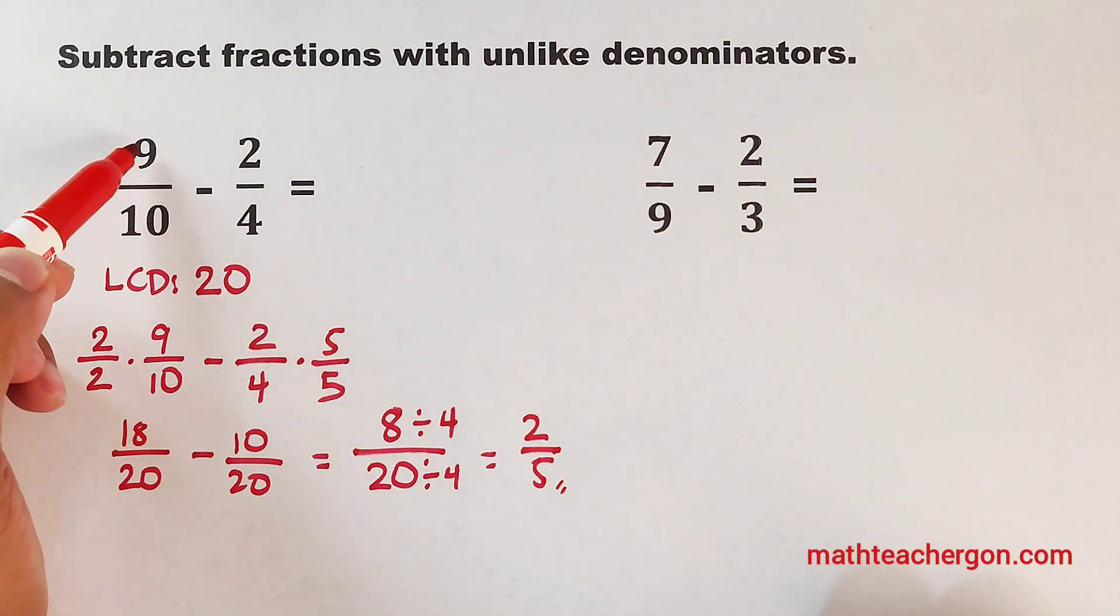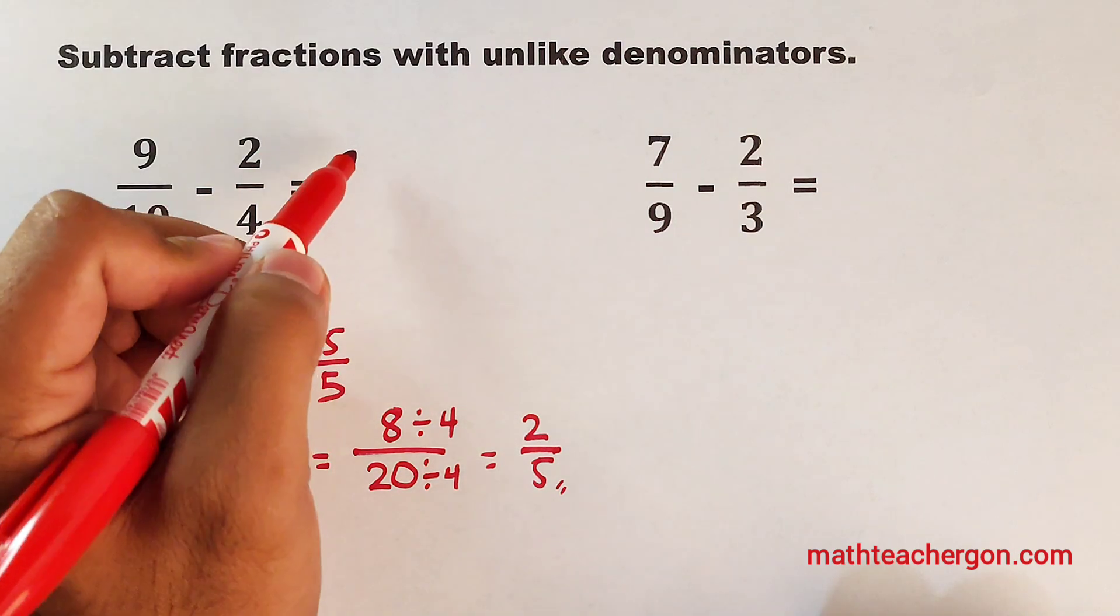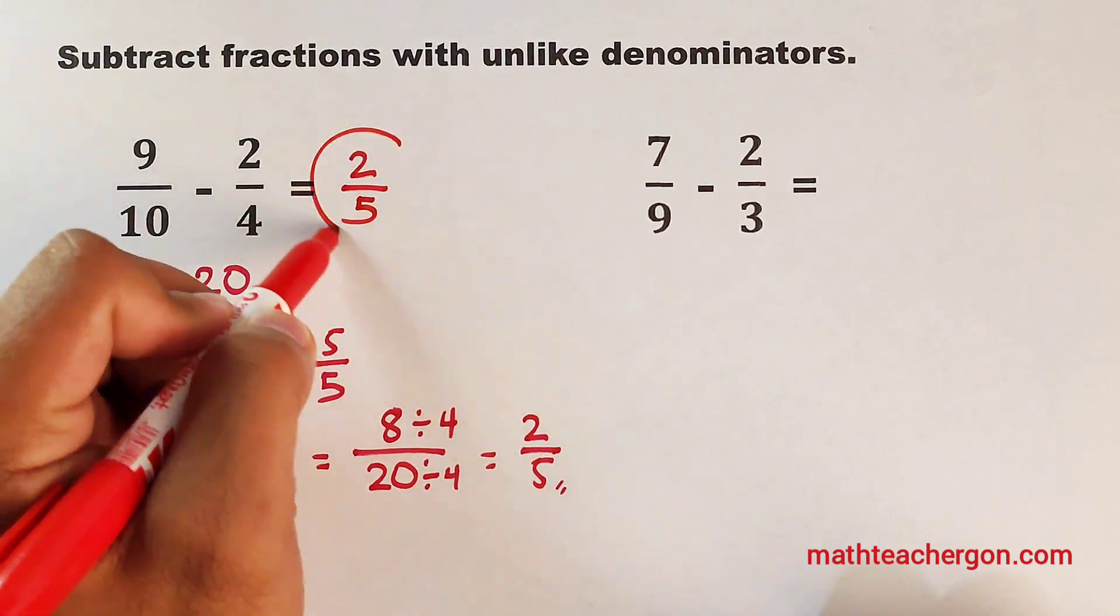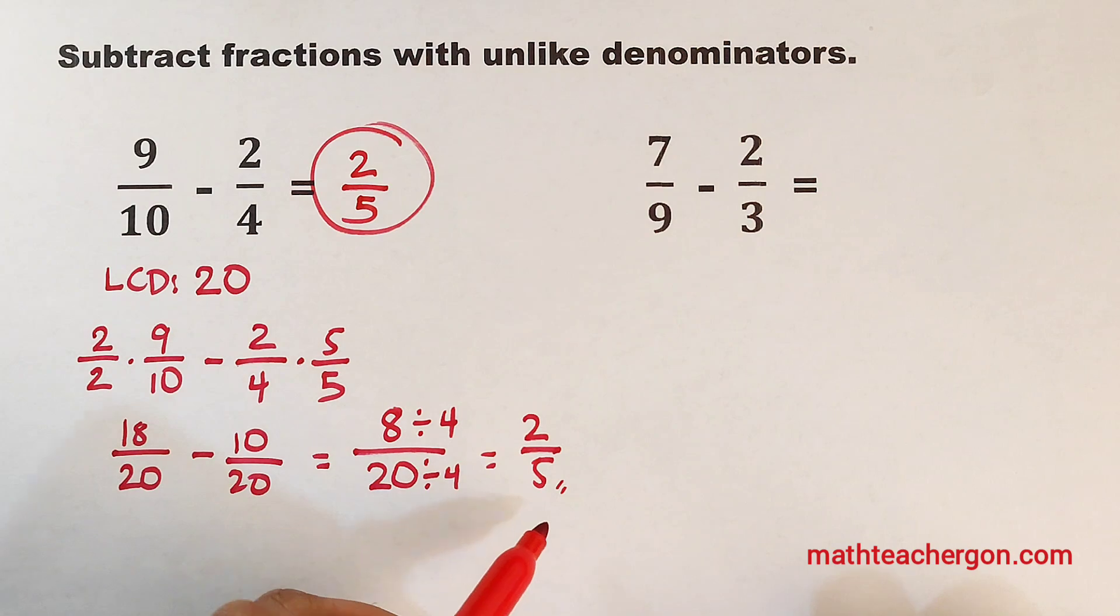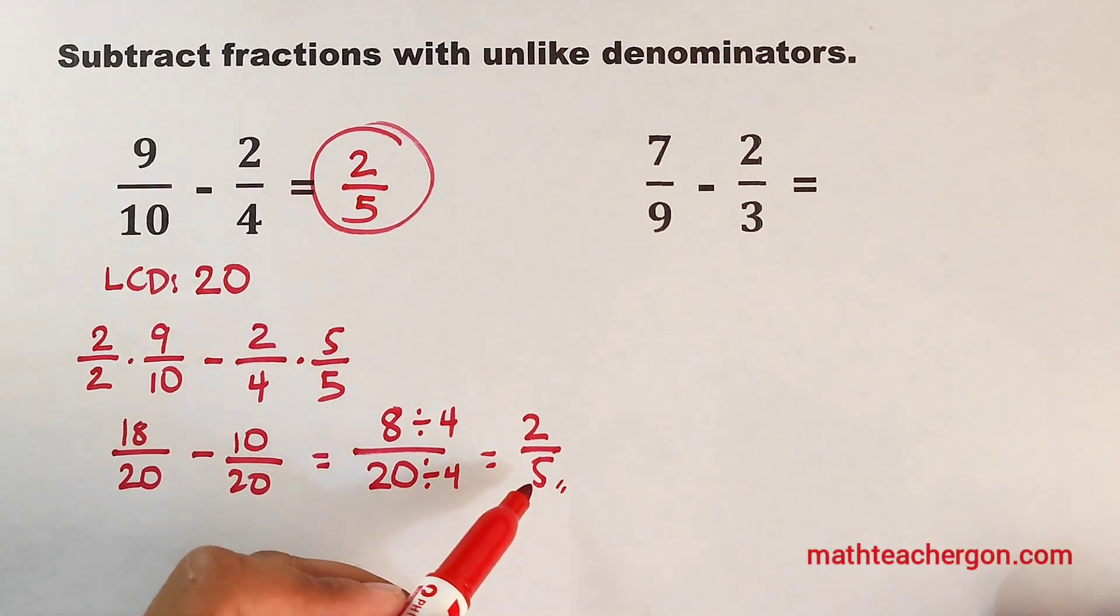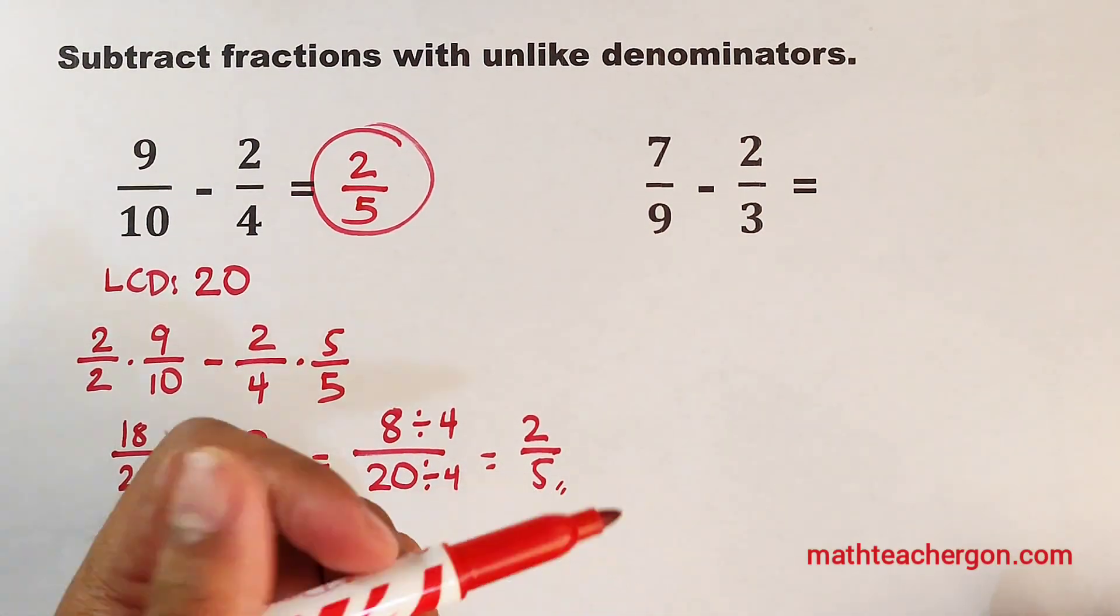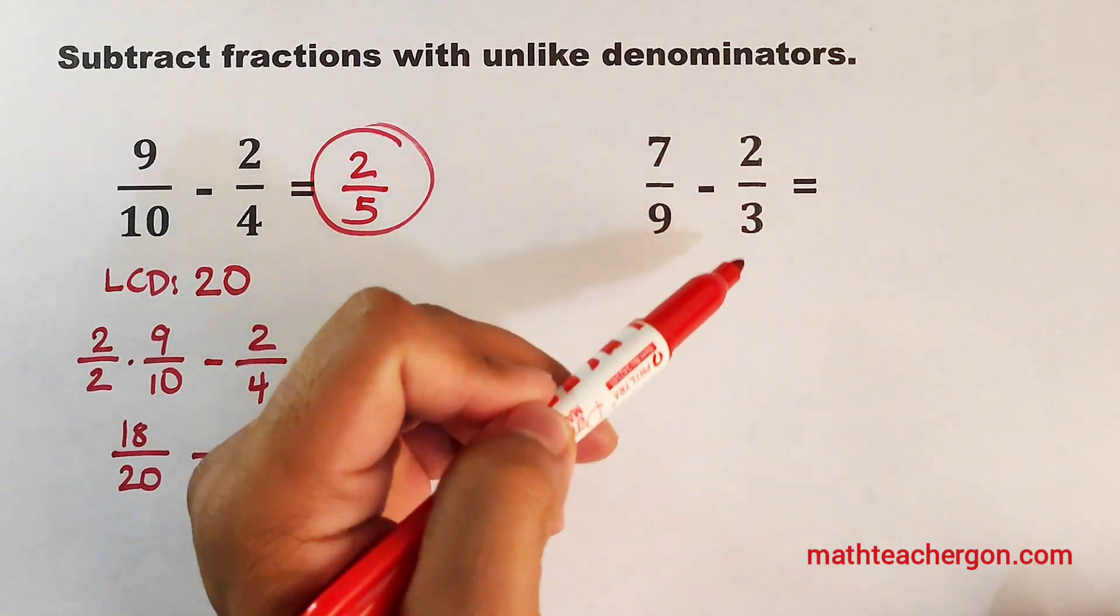Meaning, the difference between 9 over 10 and 2 over 4 is simply 2 over 5. This is the final answer. Let's move on with the last problem. For the last problem, we are given 7 over 9 minus 2 thirds.